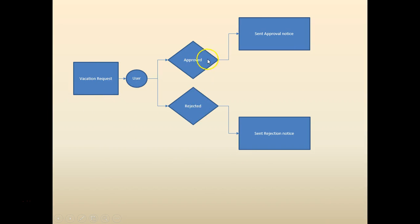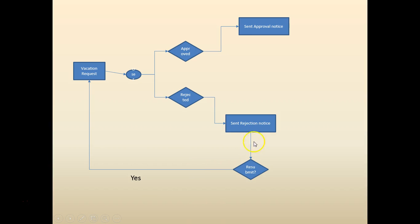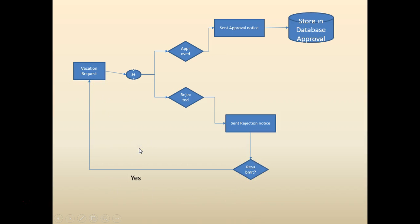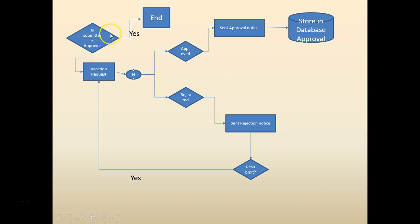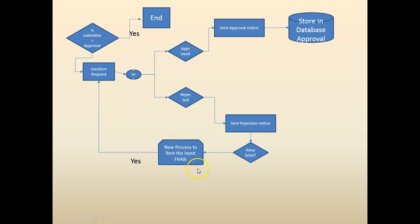The approver can either approve or reject the request. We added a loop condition where the requester can resubmit the vacation request if it's rejected. We also added a database interaction where, once the vacation is approved, the data is stored in the database, and a few checks to make sure the submitter is not the approver. We also added a new subprocess to reset the input fields.